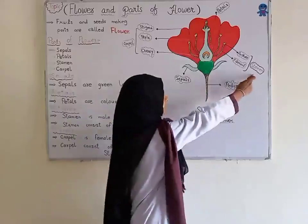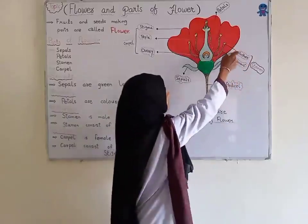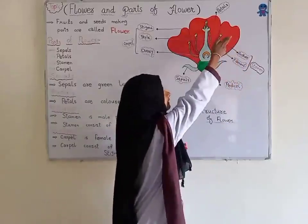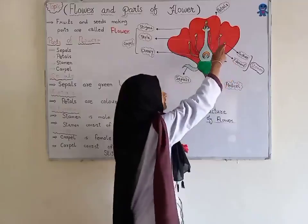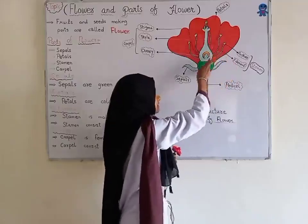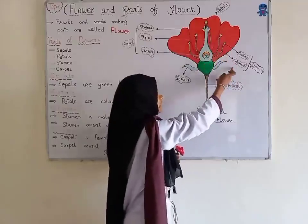Stamen consists of anther and filament. Anther is where pollen grains are formed. Filament — the long style-shaped structure is called filament.